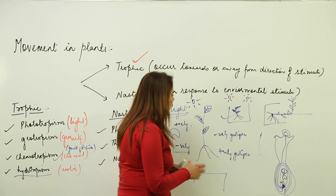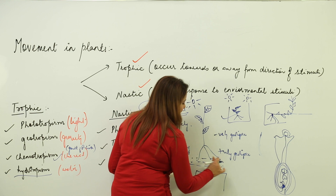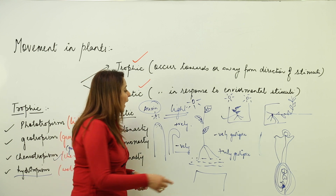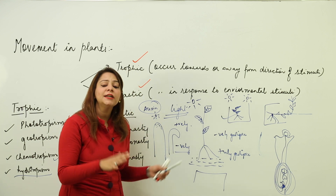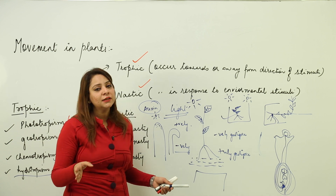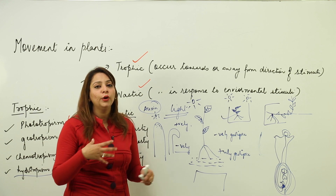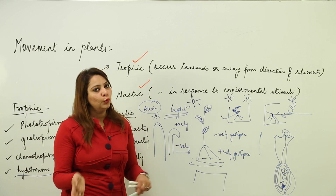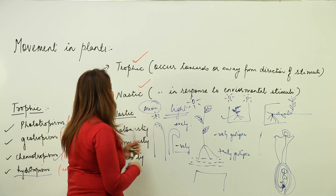Hydrotropism is movement in response to water. Roots grow towards water in the soil, making them positively hydrotropic, while the stem grows away from water, making it negatively hydrotropic. These tropic movements are fixed — the part moving towards the stimulus remains positive, and the part moving away remains negative.